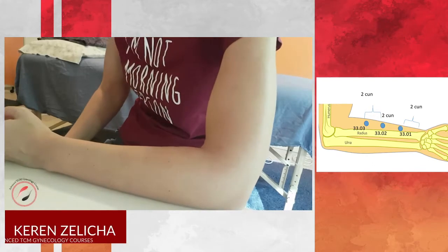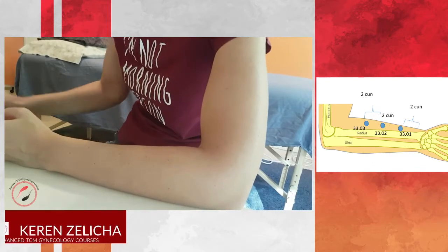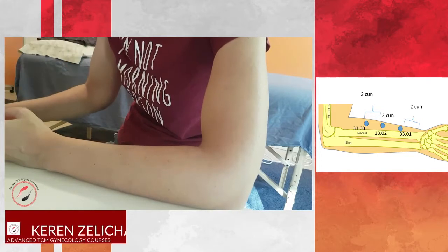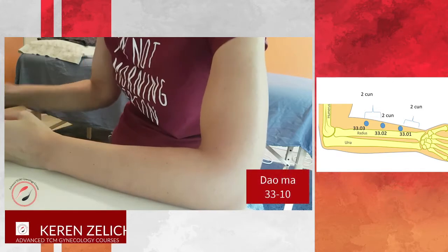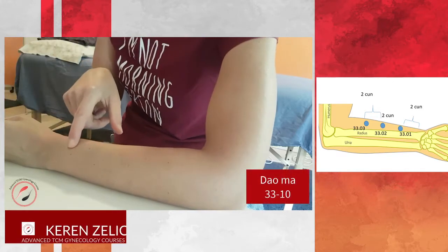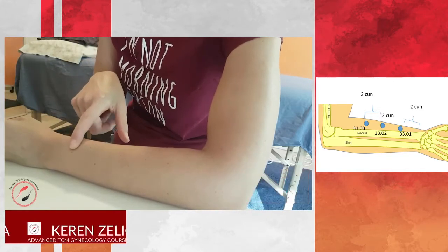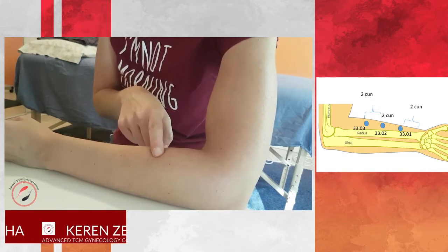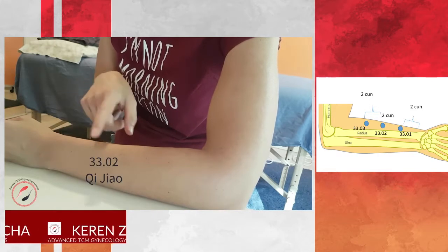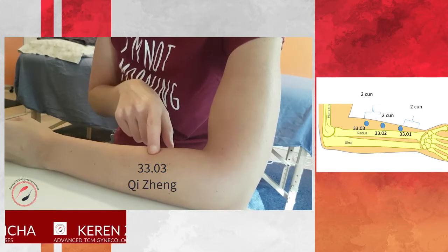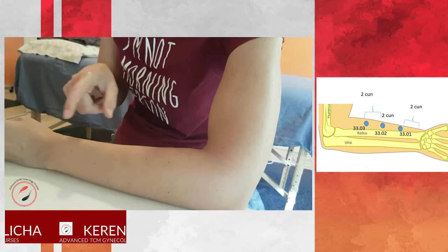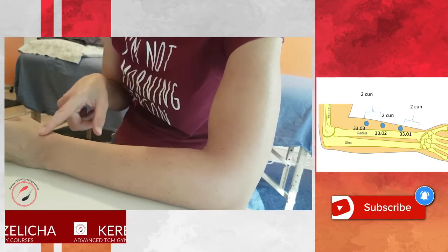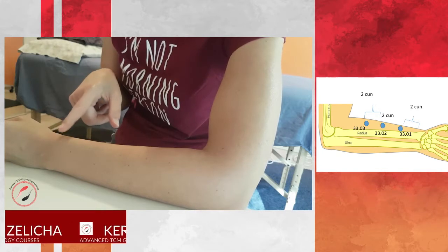Hello everybody, today I would like to speak about Dalma 3310, which are the points 3301, 3302, and 3303: qi men, qi jiao, and qi jeng. These points are located on the large intestine meridian.